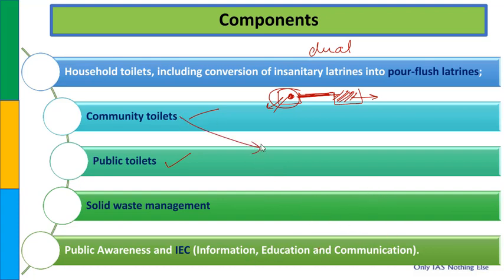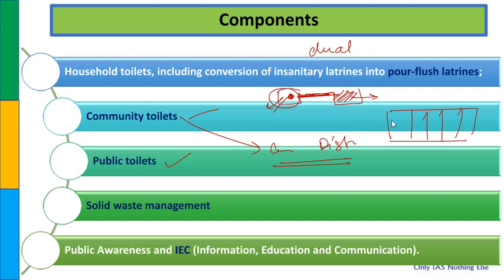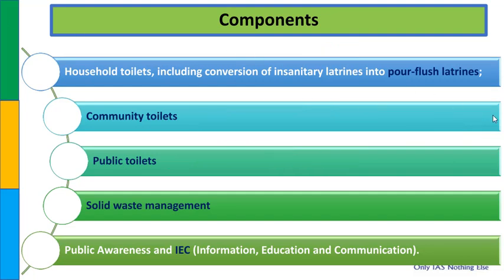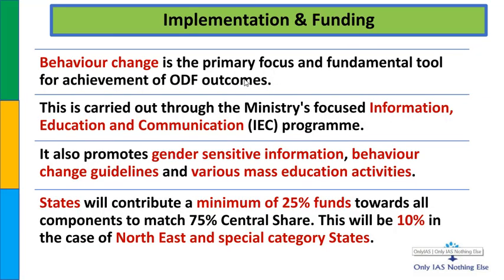Community toilets में एक problem देखने को मिल रही है - caste based discrimination. कुछ जगहों पर higher strata वाले केवल अलग toilets use करते हैं. इस discrimination को हटाने के लिए ही यह scheme बनाई गई है, हालांकि यह धीरे-धीरे defeat होता दिख रहा है. इस पर आगे भी काम जारी है.